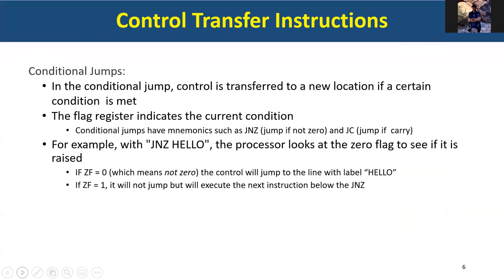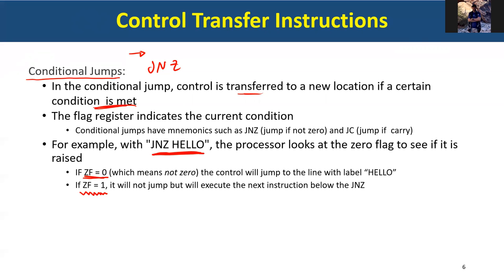The first kind of jump is the conditional jump — this is the type we used in our examples before, like JNZ (jump not zero). There is a condition: if the previous operation does not result in zero, then jump; otherwise don't jump. So in 'JNZ hello,' execution goes to the label hello if the zero flag is zero — meaning no zero occurred. But if the zero flag is one, the jump is not taken.